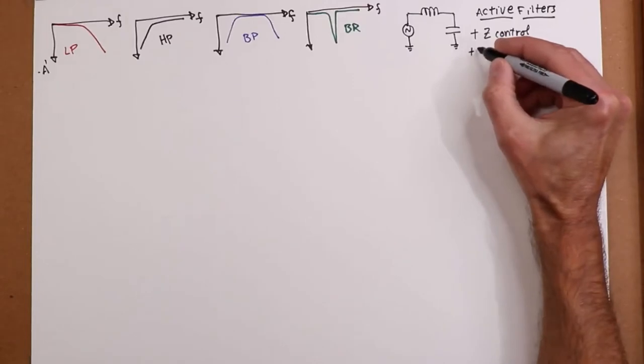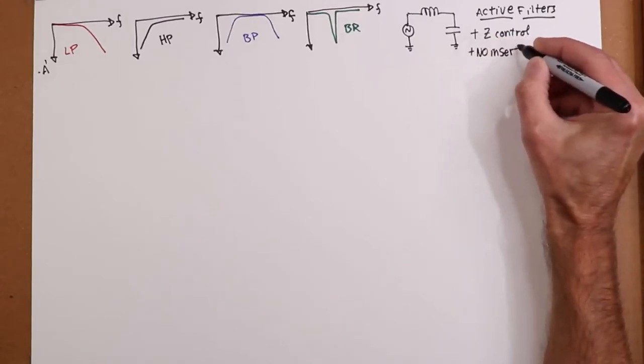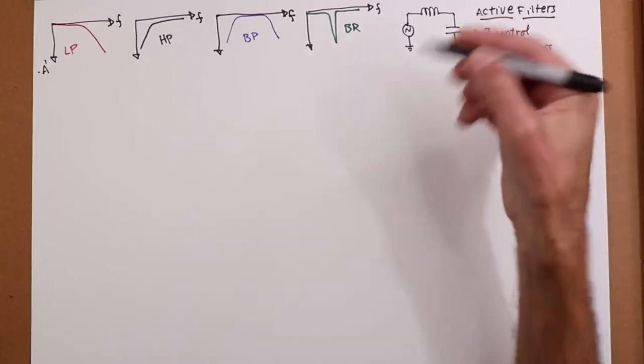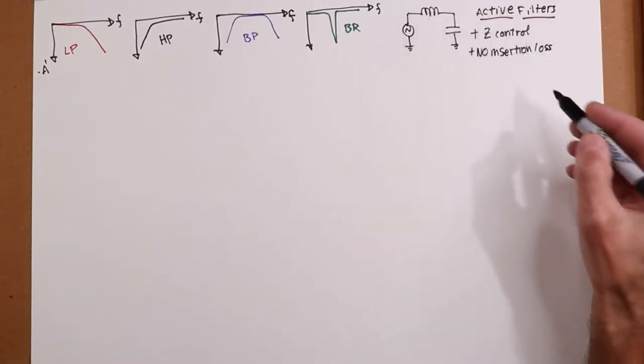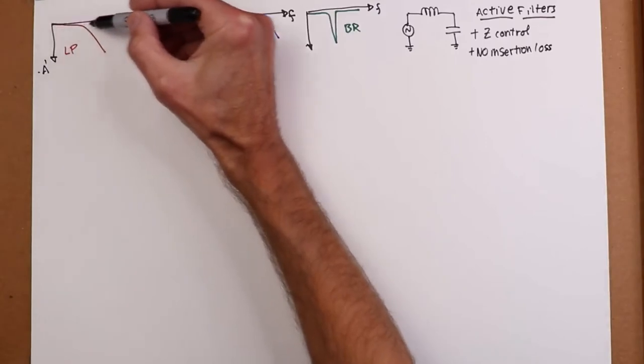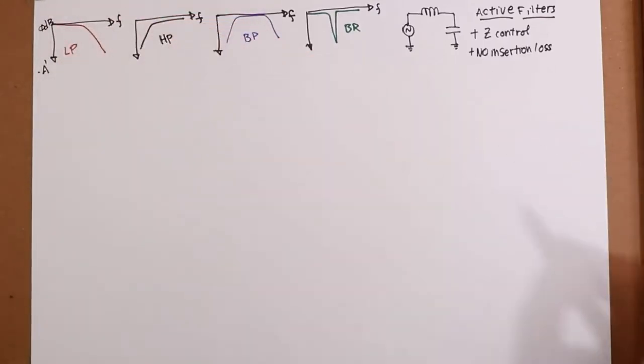The other thing is no insertion loss. So with passives, there's always going to be some signal lost. You know, there's going to be resistive elements in here. Active filters, there is no insertion loss. In other words, this can be zero dB exactly right here. Or we can even design it with gain. That's a nice little plus.